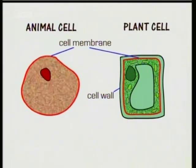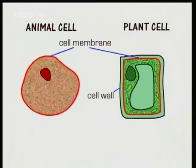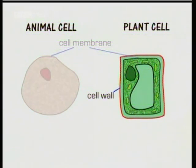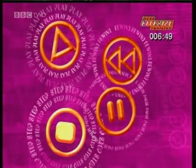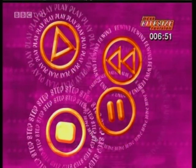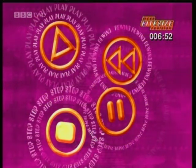Don't confuse the cell membrane with the cell wall. All cells have a cell membrane — it holds the cell together and controls the movement of substances in and out of the cell. Only plant cells have a cell wall as well, to support and protect the cell. That's the end of the section on animal and plant cells.